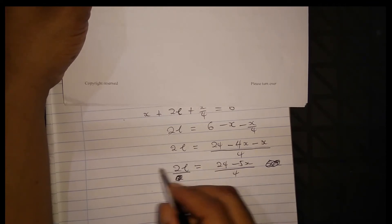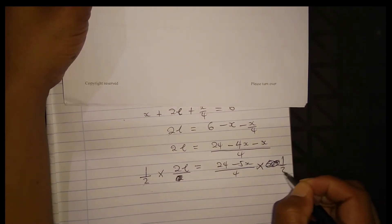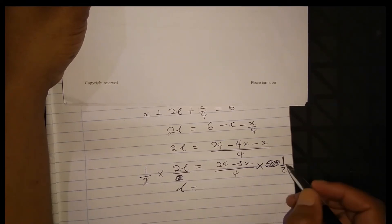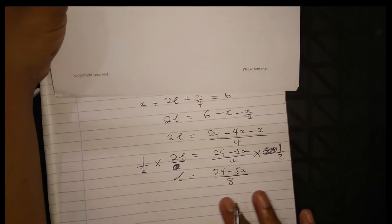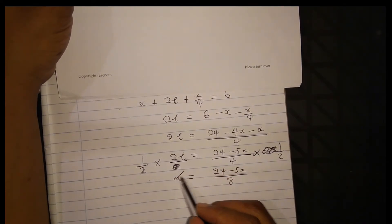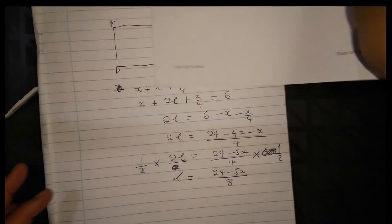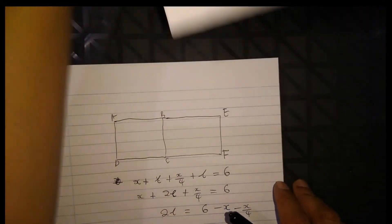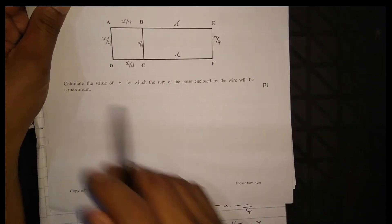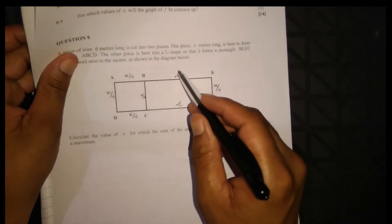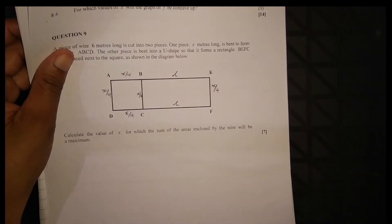Multiplying by the multiplicative inverse one over two, so the two cancels. L equals 24 minus 5x all divided by 8. Now L is expressed in terms of x. The question asks to calculate the value of x for which the sum of the areas enclosed by the wire will be a maximum.